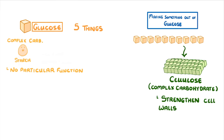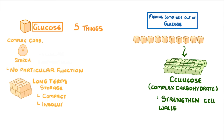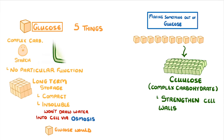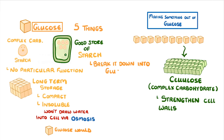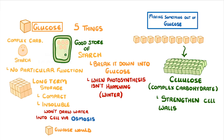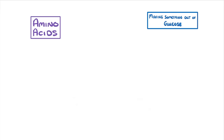Starch doesn't have a structural function as such — it's just a better form of glucose for long-term storage because it's more compact, so you can fit a lot more of it within a cell, and it's insoluble, which means it won't draw water into the cell through osmosis like glucose would. Most plant cells try to keep a good store of starch so they can break it down to glucose later, at times when photosynthesis isn't happening as much, for example during the night or in winter.